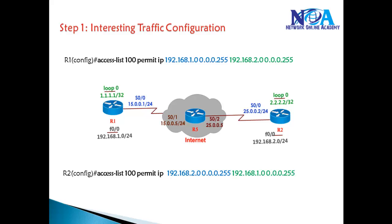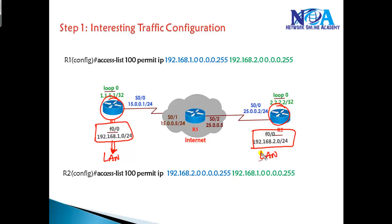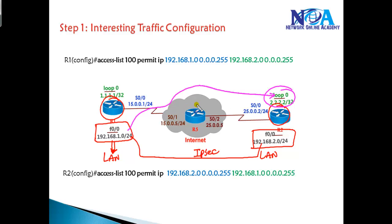Let's go to the command line. In my scenario, I have Router 1 trying to communicate with Router 2. I want to ensure that traffic from the 192.168.1.0 LAN network to the 192.168.2.0 network is encrypted and secured. Before creating any IPSec or GRE tunnels, we need to ensure reachability between Router 1 and Router 2. I have a default route pointing towards Router 5 providing that reachability.